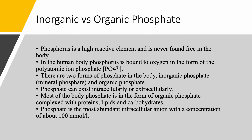What about organic versus inorganic phosphate? Phosphorus exists in the body as phosphate because phosphorus is highly reactive — it's never found free in the body. In the human body, phosphorus is bound to oxygen and is usually a polyatomic ion phosphate, PO4⁻. There are two forms of phosphate in the body: inorganic phosphate, also called mineral phosphate, and organic phosphate.